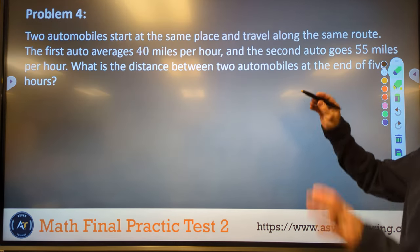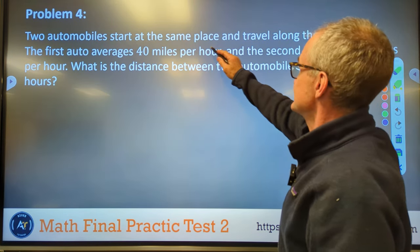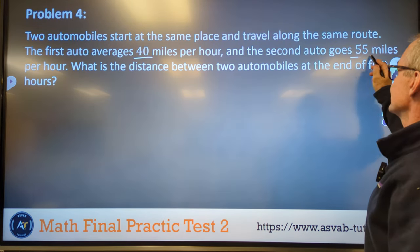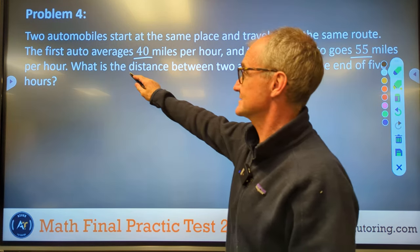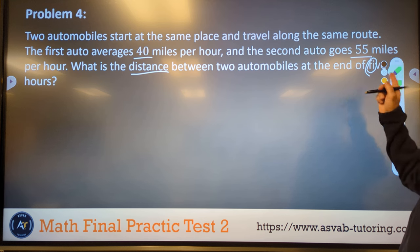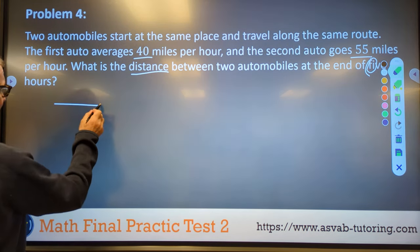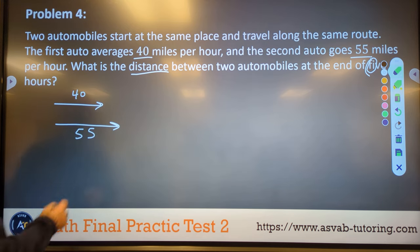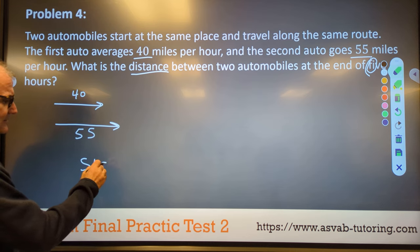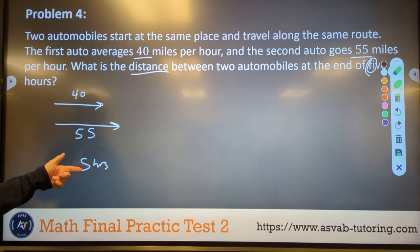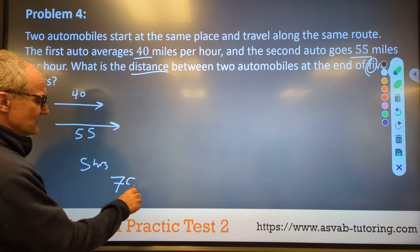Problem number four, a lot of words here, a lot of stuff to decode. Two automobiles start at the same place and travel along the same path. The first is going 40 miles per hour and the second is going 55 miles per hour. What is the distance between the two automobiles at the end of five hours? So I got this one car going here, 40 miles per hour. I have the second car right here going 55 miles per hour. And then they're going to travel for five hours. One quick way to do that is the difference between 40 and 55 is 15. So this one is making up 15 miles in an hour for five hours. So the answer is going to be five times 15 or 75 miles.